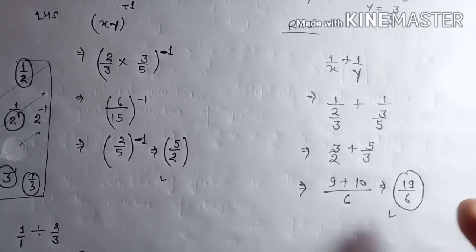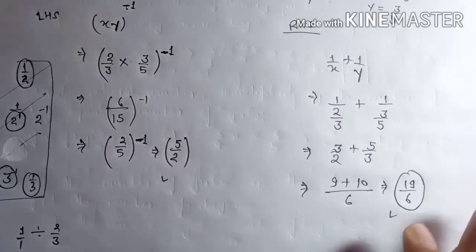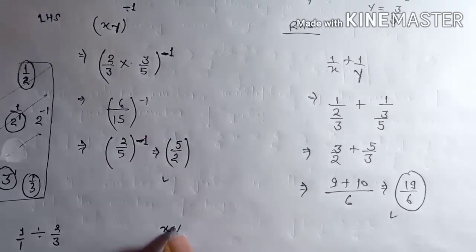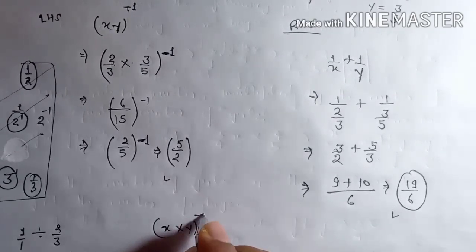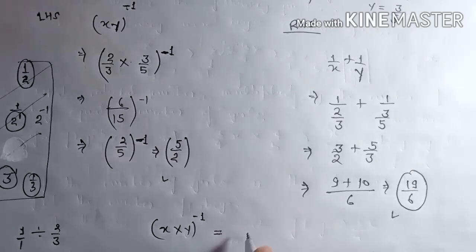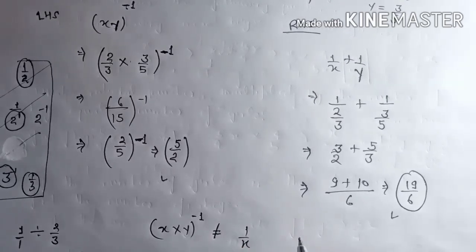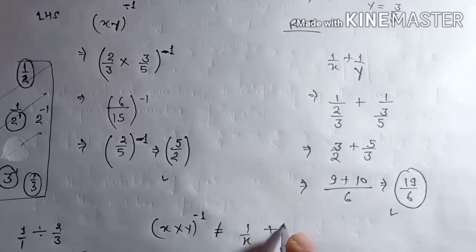Check the values: the left hand side is 5 upon 2 and the right hand side is 19 upon 6 — they are not equal to each other. So we can write that x into y to the power minus 1, that is the inverse of the product of x and y, is not equal to 1 upon x plus 1 upon y. Hence verified.